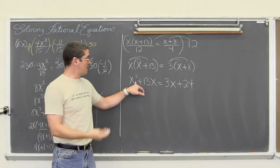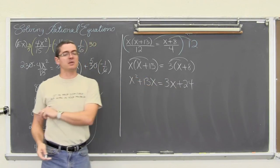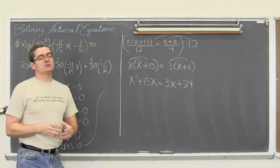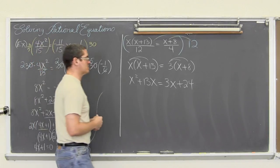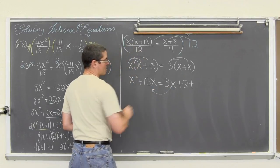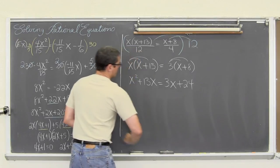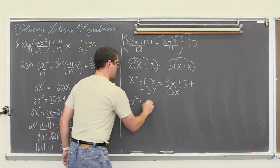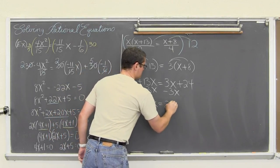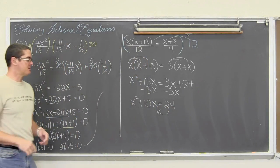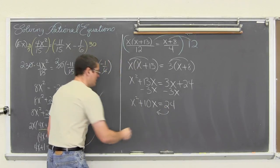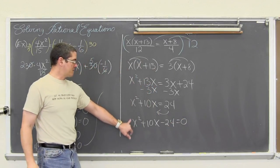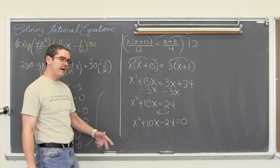We have a squared term and a single degree term, so it is not going to be possible to just get x equals a number. We are going to have to get this equation equal to zero and then either factor or use the quadratic formula. This one will be factorable as well. We are going to bring the 3x over with subtraction — subtracting 3x from both sides gives x squared plus 10x equals 24. Then subtracting 24 from both sides. Now we have a quadratic with a leading coefficient of 1, which, if factorable, is quite easy to do.